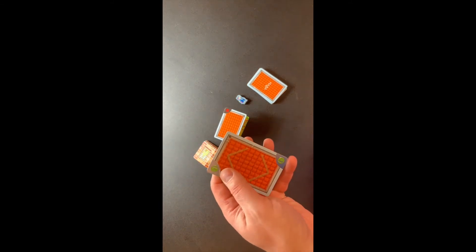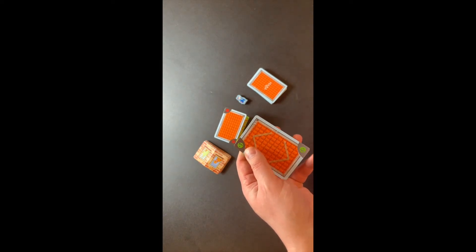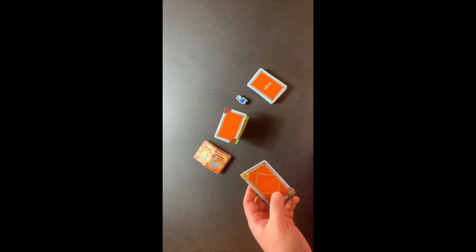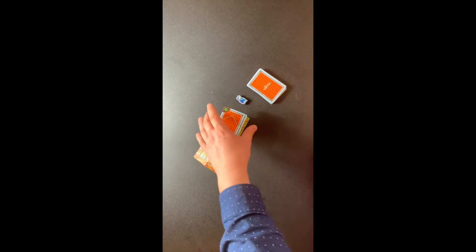This roof tile says plus one on there. If you can see that plus one, that means whoever is next in the clockwise direction will need to pick up an additional roof tile from the draw pile.